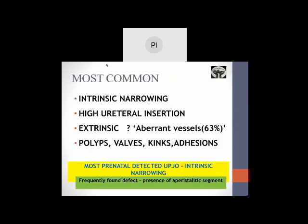The most common cause for ureteropelvic junction obstruction is intrinsic narrowing. Other causes described are high ureteral insertion. The role of an aberrant vessel, found in 63% of cases, is not very clear—whether it causes extrinsic obstruction or is just an association. Other common intraluminal causes are polyps, valves, kinks, and surrounding adhesions. The most important thing is that prenatally detected UPJO has an intrinsic narrowing as the basic problem.